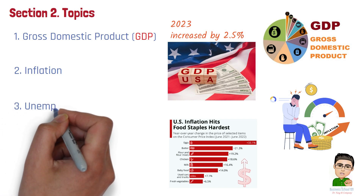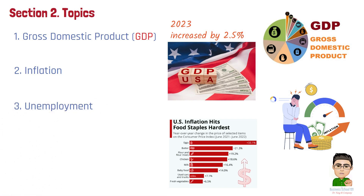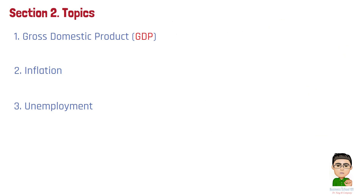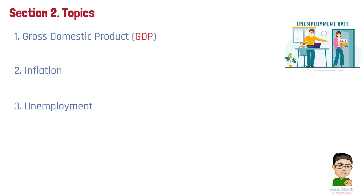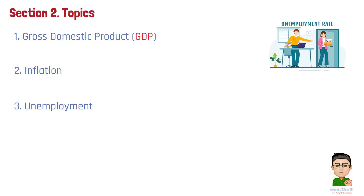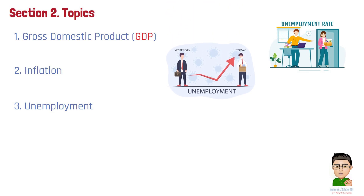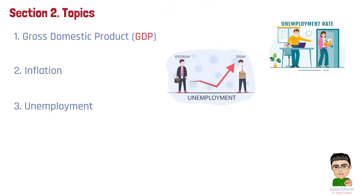Number 3: Unemployment. Unemployment rates indicate the proportion of the labor force that is jobless and actively seeking employment. Understanding the types and causes of unemployment helps in designing policies to improve job creation and economic stability. For example, during the COVID-19 pandemic, the U.S. unemployment rate spiked to 14.8% in April 2020 as businesses closed or scaled down, leading to massive job losses and economic uncertainty.